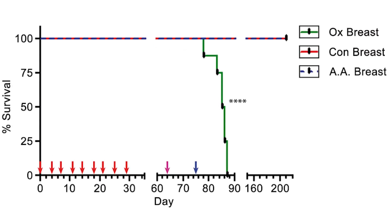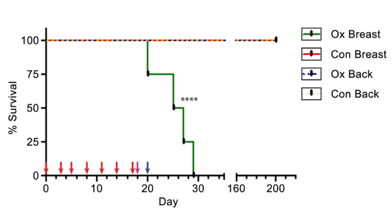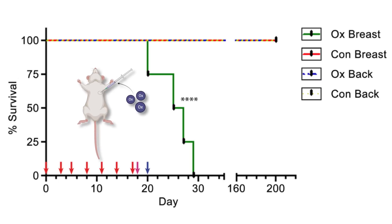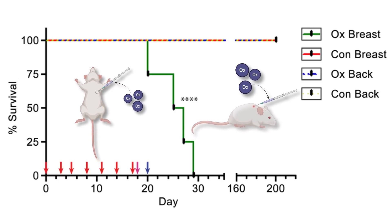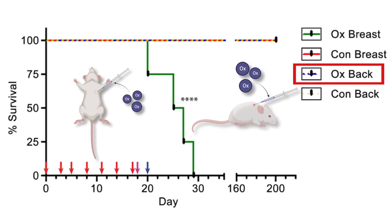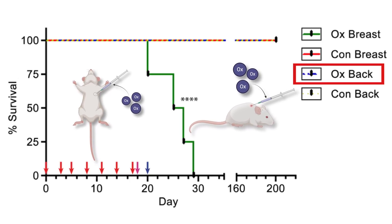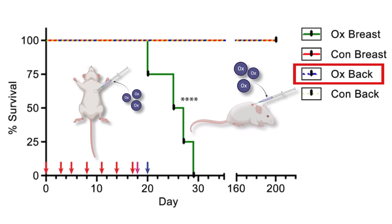Let's return to a new survival data graph, read the exact same way as before, but with an added condition that really puts things in a new perspective. We still have the injection of oxalates in the breast tissue of the mice, and we still have the control injection. However, the researchers added an injection of the very same oxalates in the back. And none of these mice died, and none developed tumors. We're establishing tissue specificity: oxalates only negatively affect breast tissue.